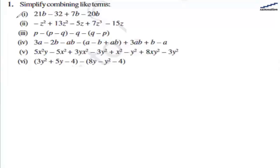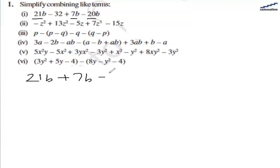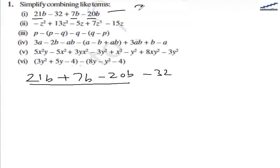In this question we are asked to simplify by combining like terms. For the first one, the like terms are 21b, 7b, and minus 20b. Let's write it by combining the like terms. The answer will be 8b minus 32 for the first one.